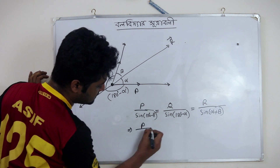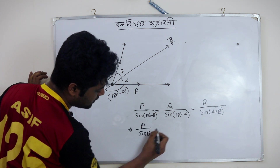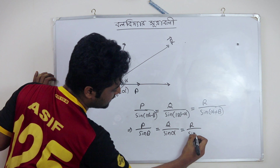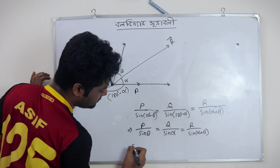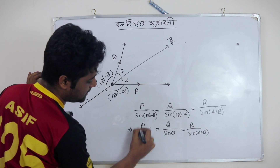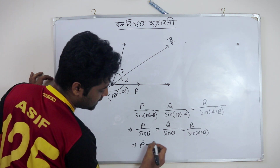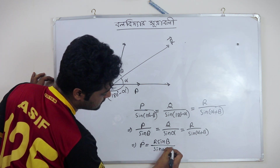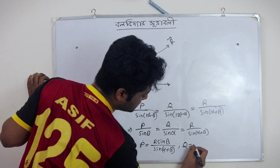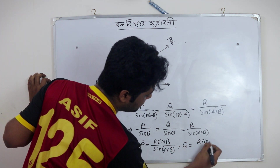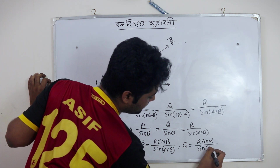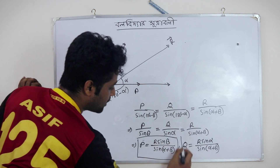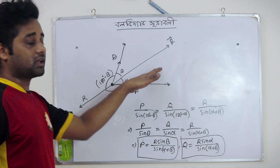Sin 180 degree minus sin beta, equal to Q by sin alpha, equal to R by sin alpha plus beta. Let me tell you: P equal to — P by sin beta equal to R by sin alpha plus beta. P is equal to R sin beta divided by sin alpha plus beta, and Q is equal to R sin alpha divided by sin alpha plus beta.